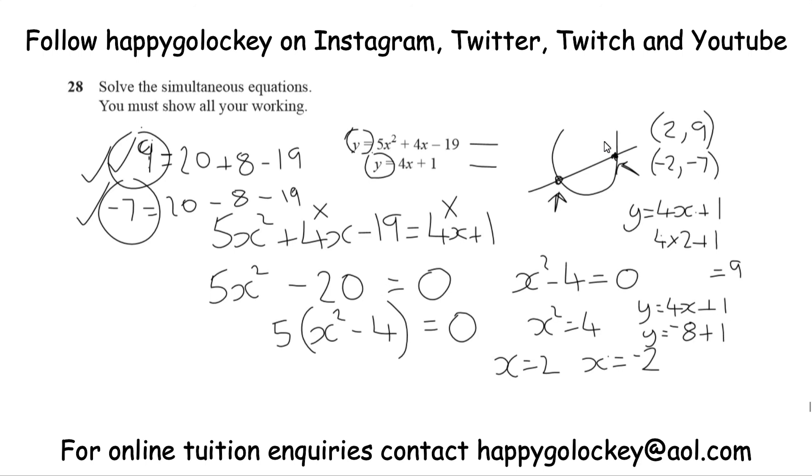2, 9, and negative 2, negative 7. Okay, I hope you enjoyed that one, you learned something from it. I've been HappyGoLocky, and today you've been solving simultaneous equations where one is a quadratic, one is linear, by setting one equation equal to another. Thanks so much guys, see you again soon. Bye!